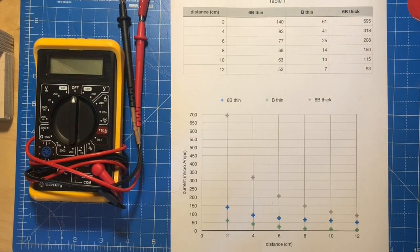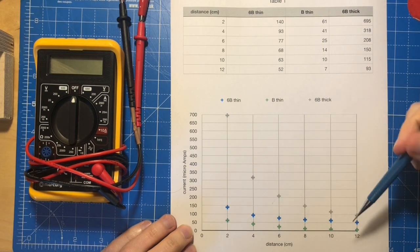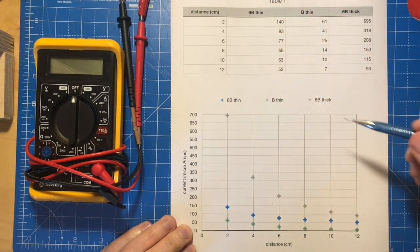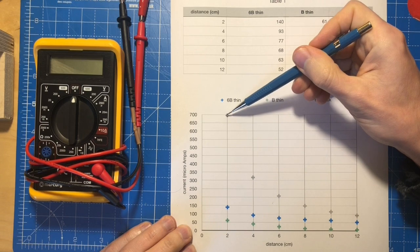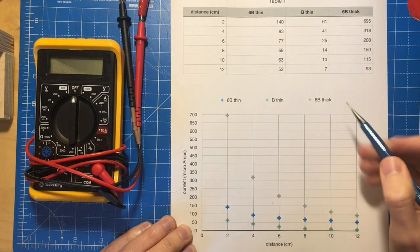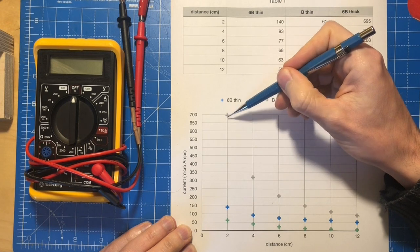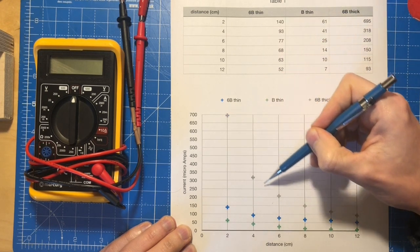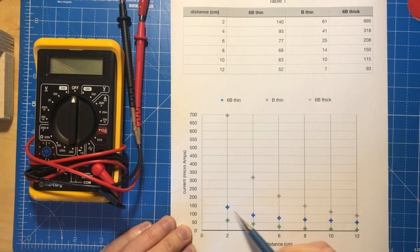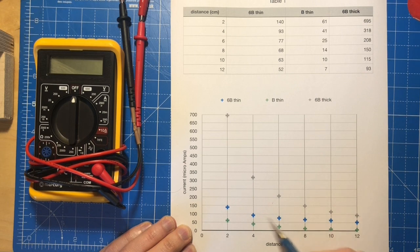I've gone ahead and plotted these and as you can see we have the three nice curves for each one. The largest numbers are for the 6B thick lead up here. And you can see it's a really pronounced curve. The other two ones, because they started with smaller numbers, it's a bit harder to see, but I think you can also see that there's something of a curve there.